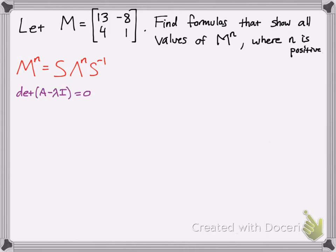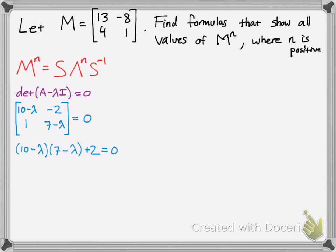So let's calculate the eigenvalues. Determinant A minus lambda I equals zero. Go your basic roundabout way of calculating the determinant, then solve for lambda. You should get lambda 1 equals 9 and lambda 2 equals 8. And that will be your diagonalization matrix.